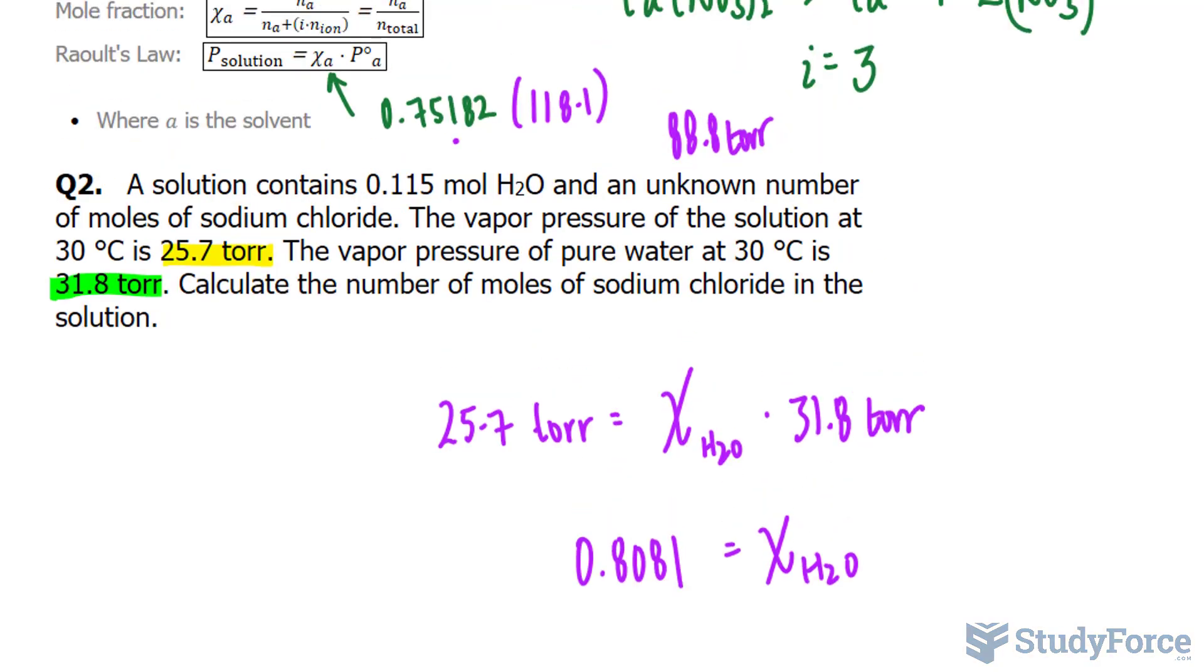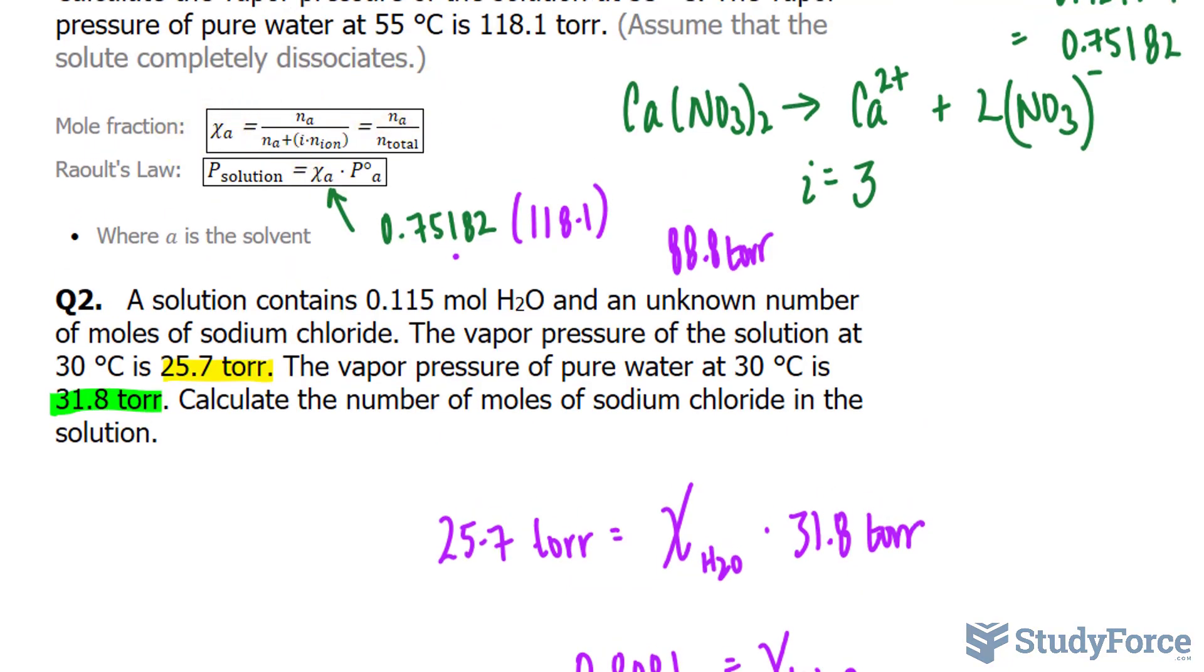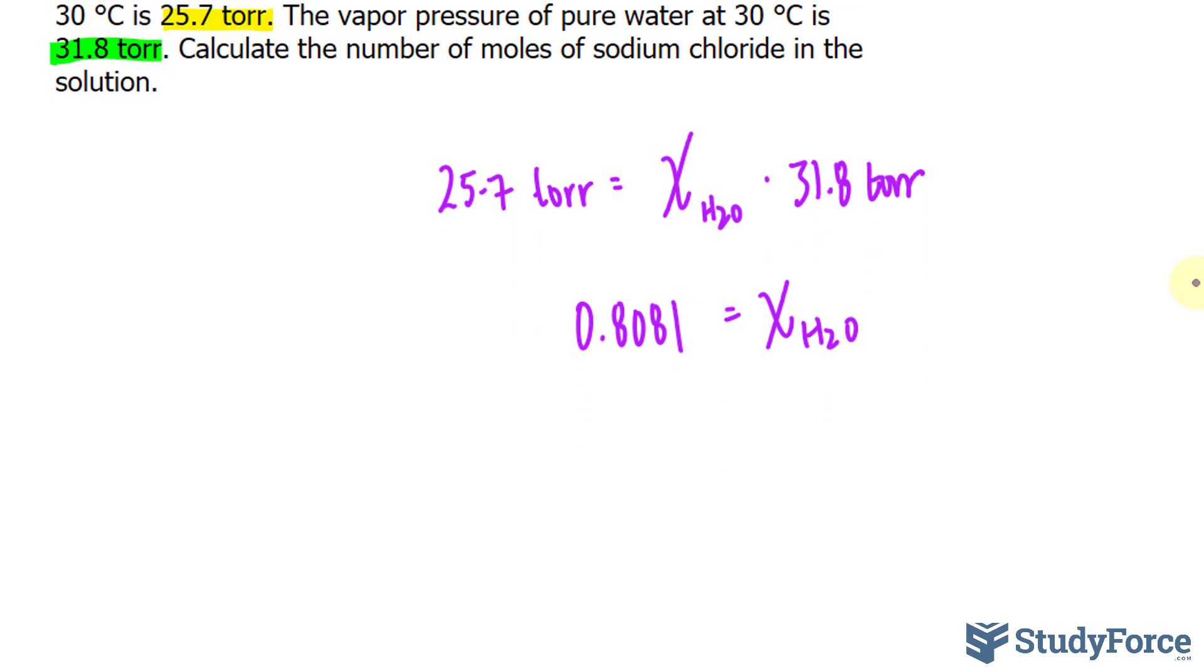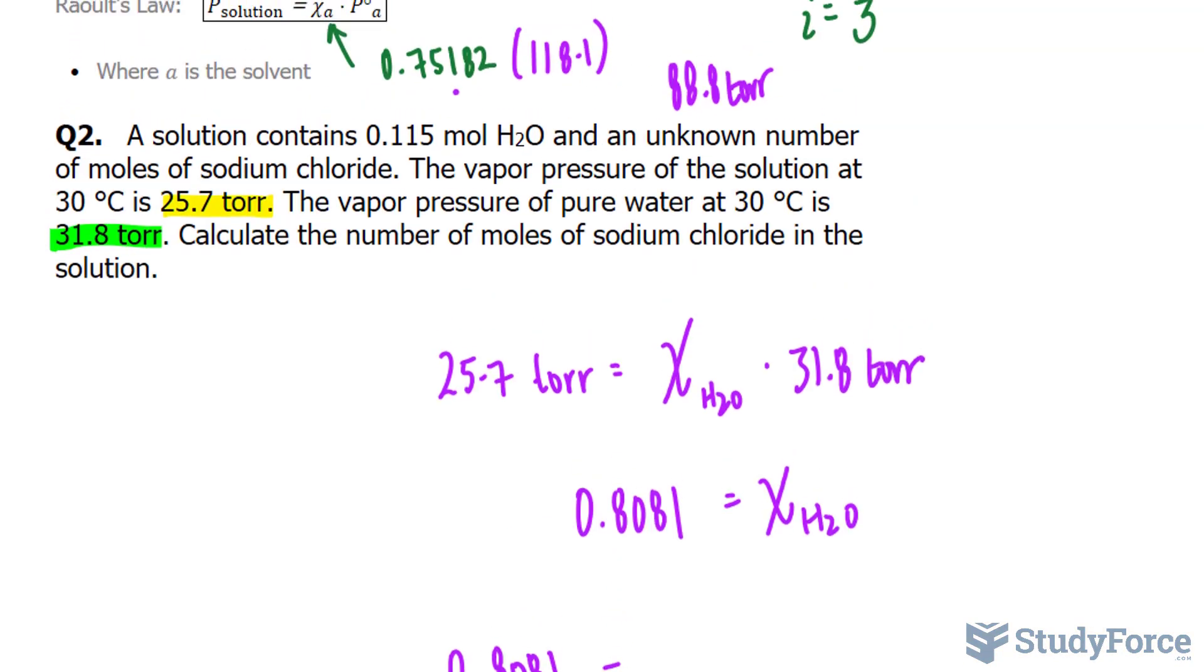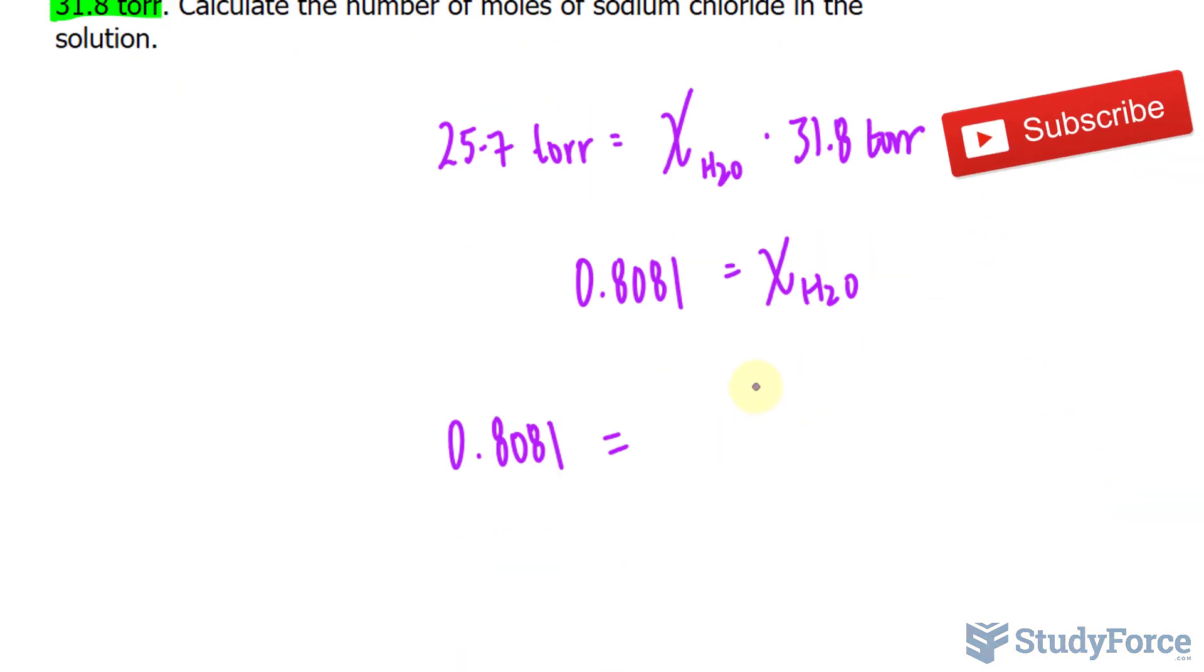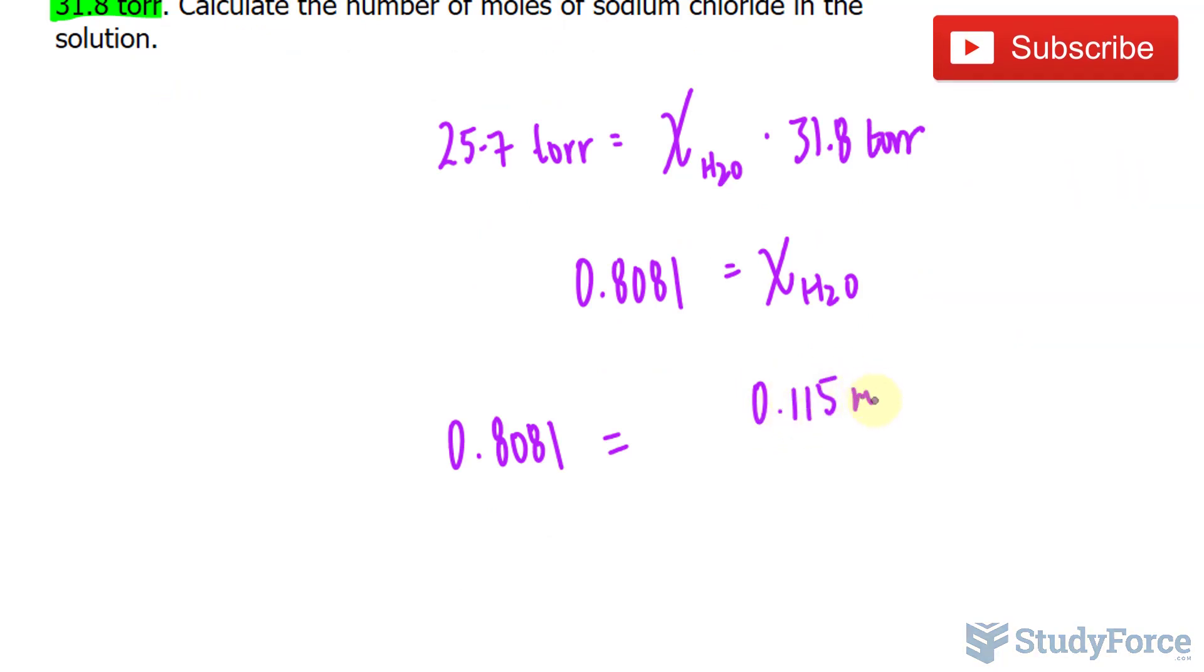We are looking for the number of moles of sodium chloride. So we'll use the mole fraction relationship, also shown here. And that formula is 0.8081, that's the mole fraction. It's equal to the moles of the solvent, let's see if that's given, yes we're given 0.115, that goes at the top, 0.115 moles of water, over 0.115 moles of water. We're finding the total number of moles, plus i times x.